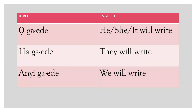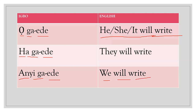'O ga-ede' simply means 'he, she, or it will write.' 'Ha ga-ede' means 'they will write.' 'Ani ga-ede' means 'I will write.'